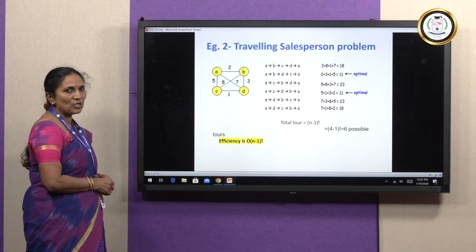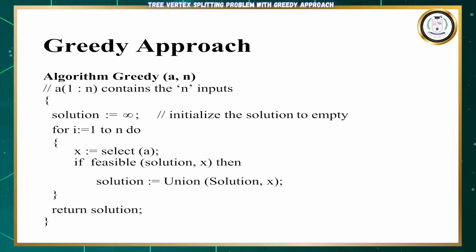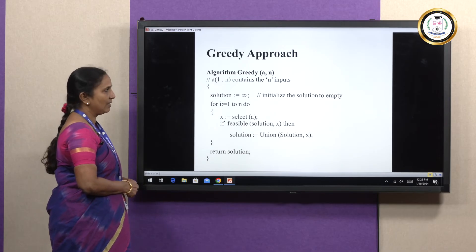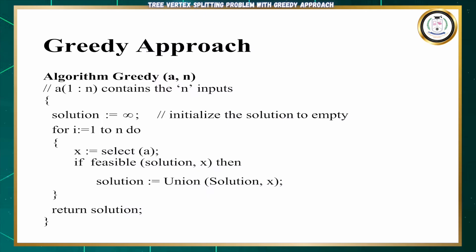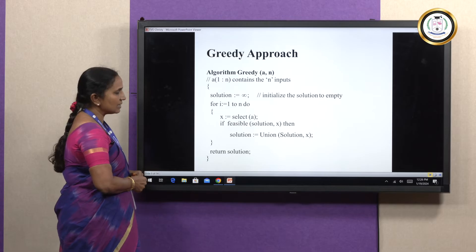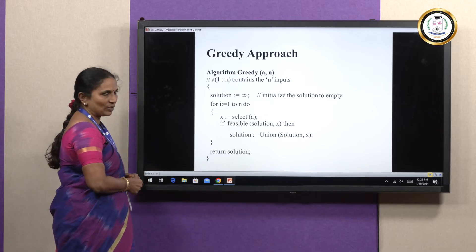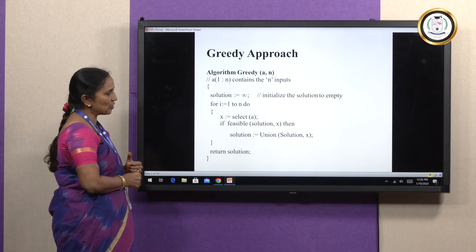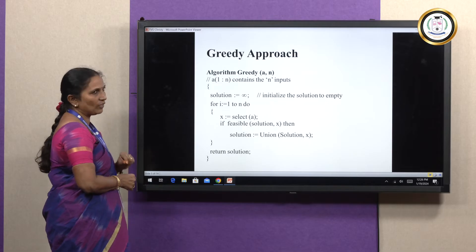This is how the greedy approach works. Now we will see the generalized algorithm for the greedy approach. In this greedy approach, we are having an array A which has n inputs. Initially, the solution is set to null, that is empty. Each and every element from this array is taken one by one; we select one element from the set, call it X, and check whether X will give a feasible solution or not. If X gives a feasible solution, then we include it in the solution set. All n values are selected one by one; if it gives a valid solution it is included, if not, we ignore it.